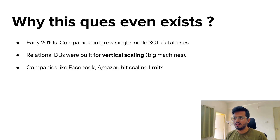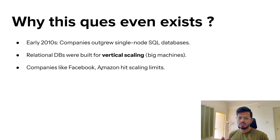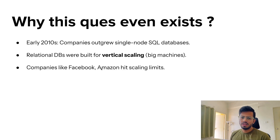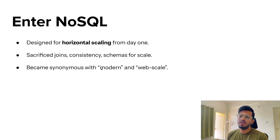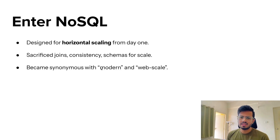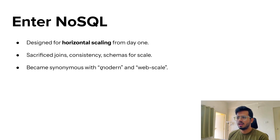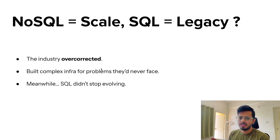This question started being asked in the early 2010s when companies like Facebook and Amazon were scaling and outgrew single-node SQL instances. That's where NoSQL entered and got a big boom, especially for horizontal scaling. People started using NoSQL even for 100 users because it was that easy. But it sacrificed joins, consistency, and schemas for scale, and it eventually got used everywhere — small, medium, and large applications.